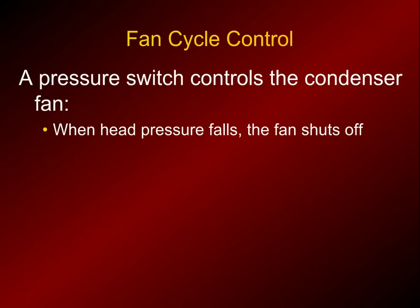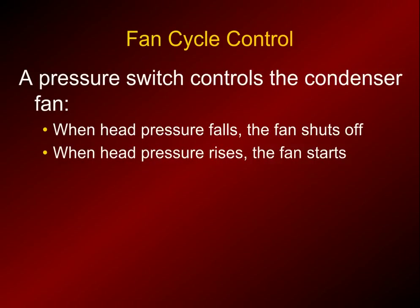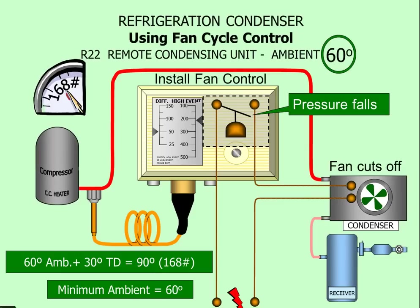Let's take a look at the fan cycle control. It is just a pressure switch — when the head pressure falls below a set point it breaks the connection and turns the condenser fan off, then when the head pressure rises back to a certain point it makes the connection and restarts the fan. To install it, you'll connect the pressure sensing port to the high side of the system. Find a high-side pressure port on the condenser to connect it to; if there isn't one, you'll have to install one. Then locate the L1 terminal to the condenser fan, break that wiring, and wire into the pressure switch controls.